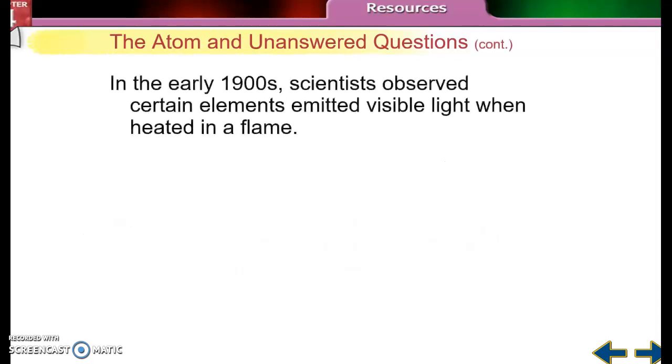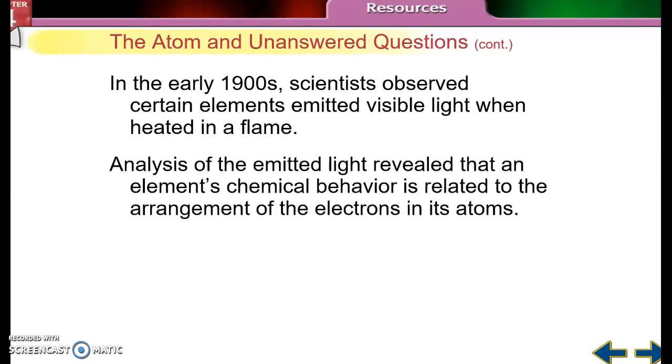That's when Bohr started lighting things on fire. When he would heat different elements, he noticed that certain elements emit visible light when they are heated. His analysis of that emitted light revealed that the chemical behavior of an element is due to its arrangement of electrons. That's a big deal.